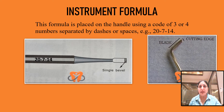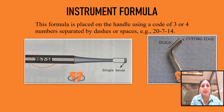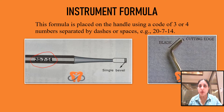G.D. Black gave an instrument formula describing the dimensions and angulations of the hand instrument. The instrument formula is placed on the handle in a code of three or four numbers separated by spaces or dashes. Now when do we use a three number formula and when is it four numbers?